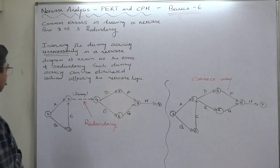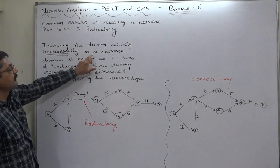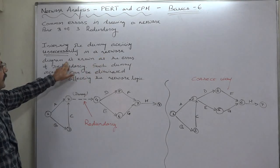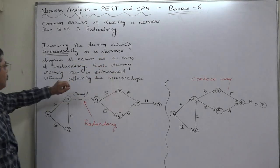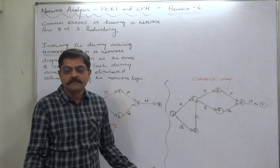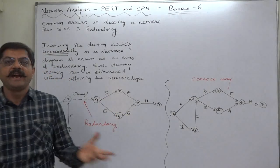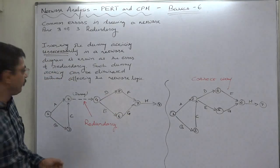What is redundancy? Inserting the dummy activity unnecessarily in a network diagram is known as the error of redundancy. Redundant means which is not necessary. Removal of which does not affect the final result is called redundant factor.